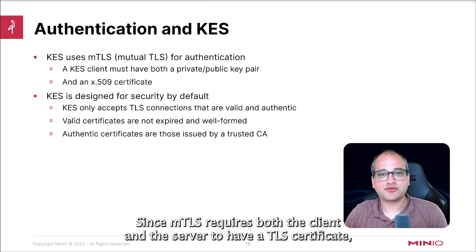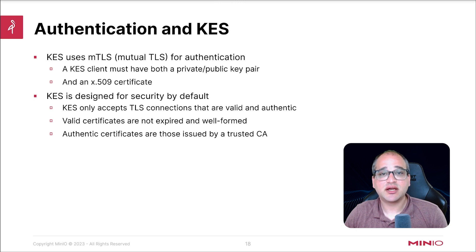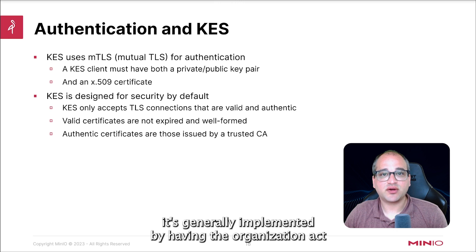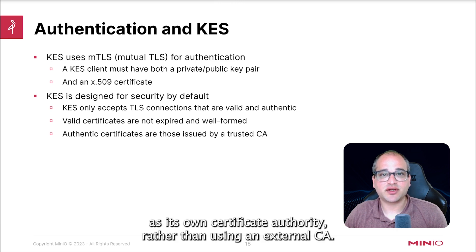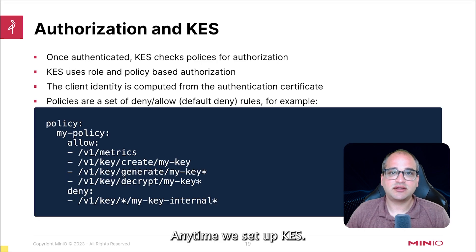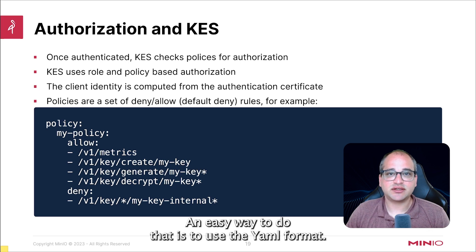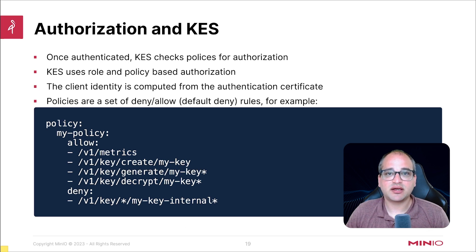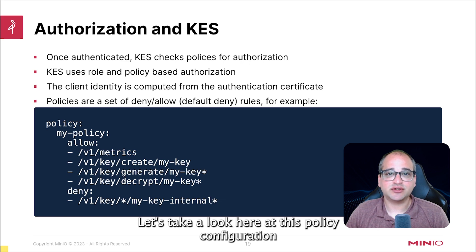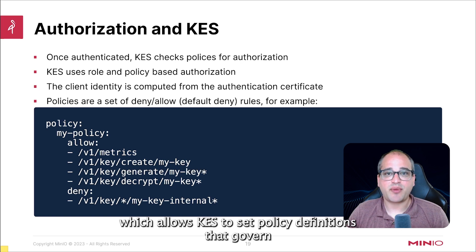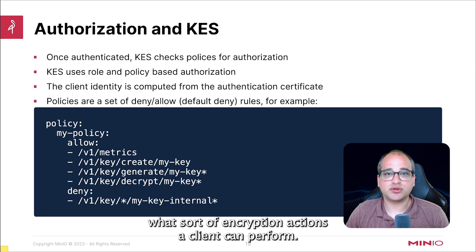Since MTLS requires both the client and the server to have a TLS certificate, it's generally implemented by having the organization act as its own certificate authority rather than using an external CA. Anytime we set up KES, we generally need to provide it a configuration file. An easy way to do that is to use the YAML format. Let's take a look at this policy configuration, which allows KES to set policy definitions that govern what sort of encryption actions a client can perform.